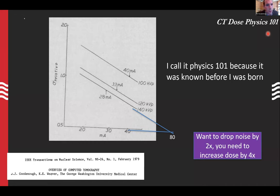The easiest example to bring this home: go to PACS, look up a PET attenuation correction scan, look up a cancer follow-up scan. If the same patient has both in their jacket, you'll see a very big difference in MAS and in the noise in the images.